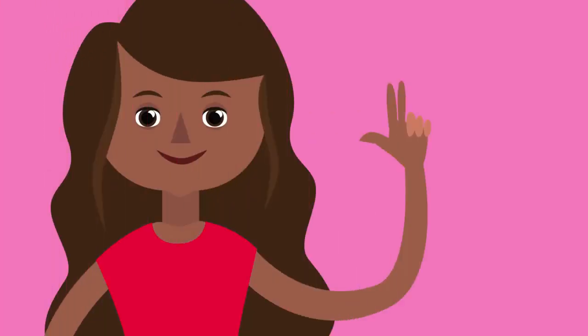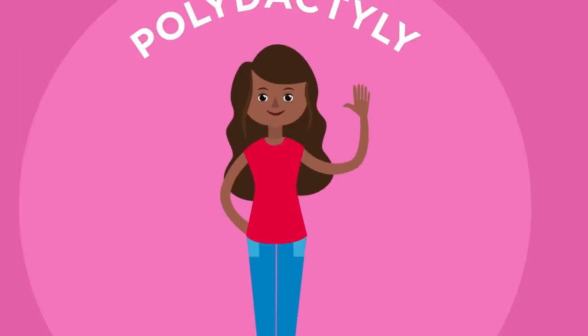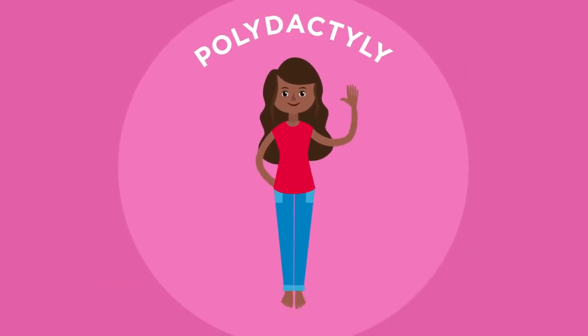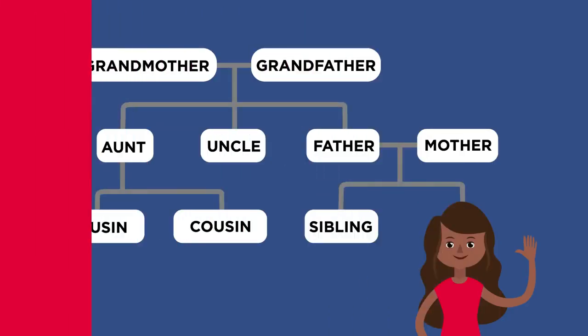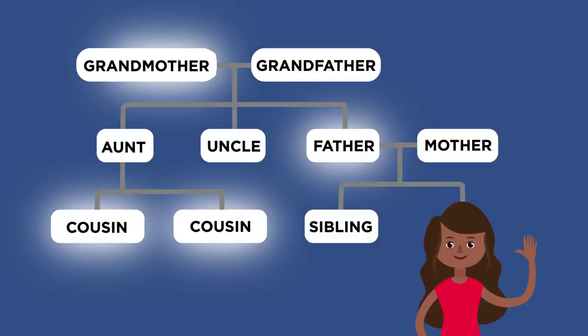This girl has six fingers on her left hand. She has a condition called polydactyly which causes extra fingers or toes. Her father and grandmother as well as some of her cousins also have the condition. This should give you a clue about how she came to have it.